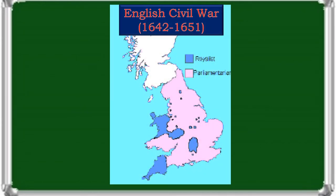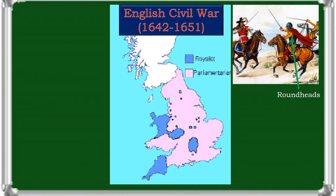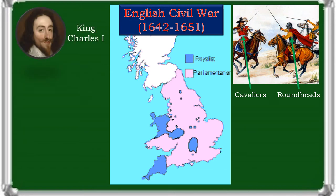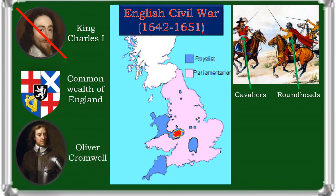The English Civil War was a series of civil wars and political machinations between Parliamentarians, or Roundheads, and the Royalists, or Cavaliers, principally over the manner of how England should be governed. King Charles I wanted to rule as an absolute monarch, while Parliament wanted a constitutional monarchy. War broke out, and after nine years of fighting, the war ended with Parliamentarian victory at the Battle of Worcester on 3 September 1651. The outcome of the war was threefold: the trial and execution of Charles I, the exile of his son Charles II, and the replacement of the English monarchy with, at first, the Commonwealth of England, and then the Protectorate under the personal rule of Oliver Cromwell, and briefly his son Richard. Constitutionally, the wars established the precedent that an English monarch cannot govern without Parliament's consent.